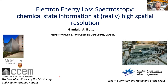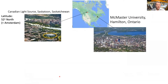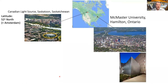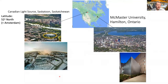Both facilities are on traditional territory, and I want to acknowledge that fact. For those not familiar, Saskatoon is located in the prairies, Hamilton on the westernmost end of Lake Ontario, both in Canada. McMaster University is the home of the Canadian Centre for Electron Microscopy, operational since 2008, and Saskatoon is home of the Canadian Light Source — a land of blue skies but also a land of extremes.